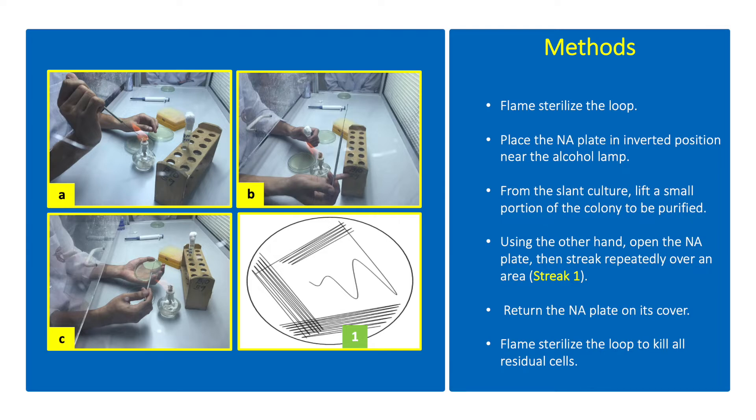Flame sterilize the loop by holding it directly above the flame. Wait until glowing red. Pass the rest of the wire over the flame twice. Cool by holding loops still close to the flame.